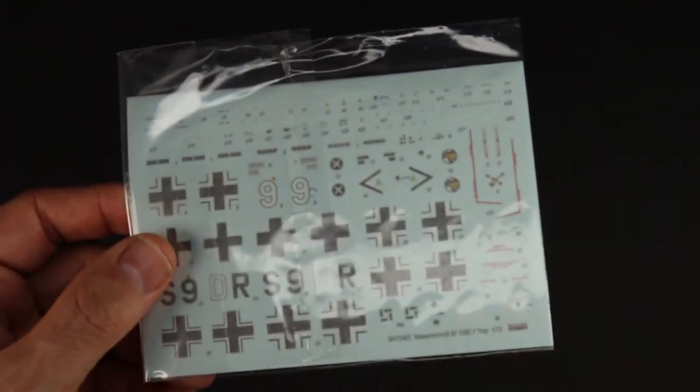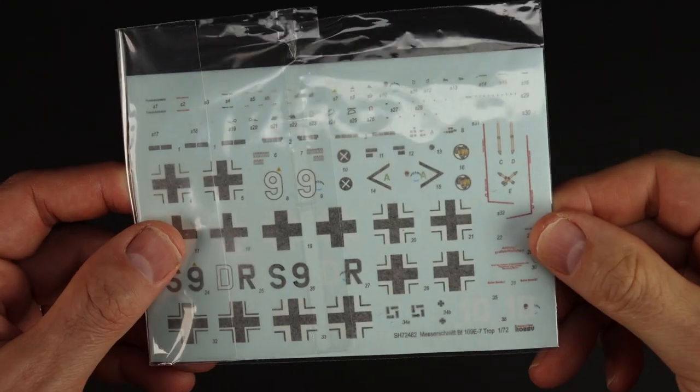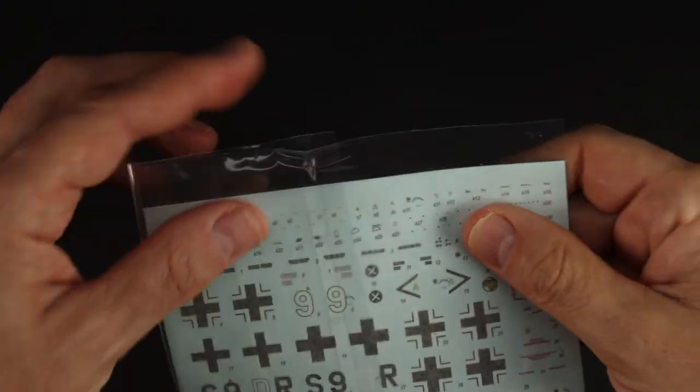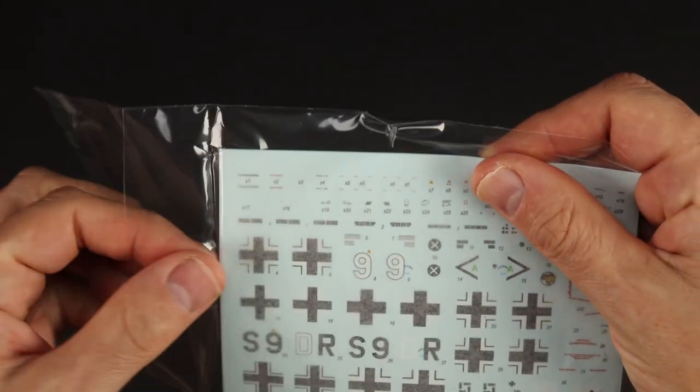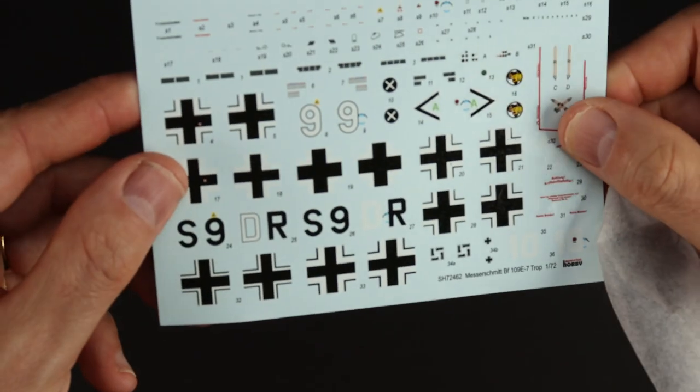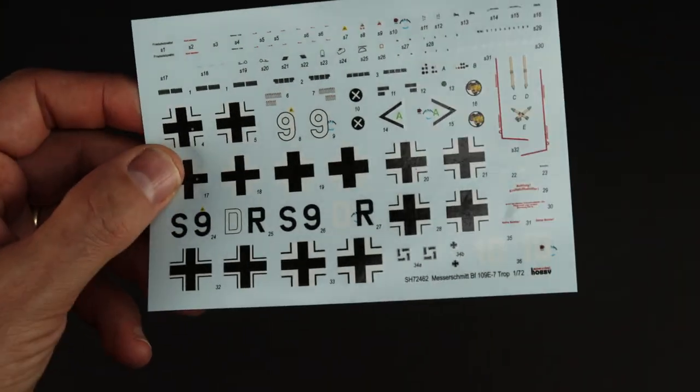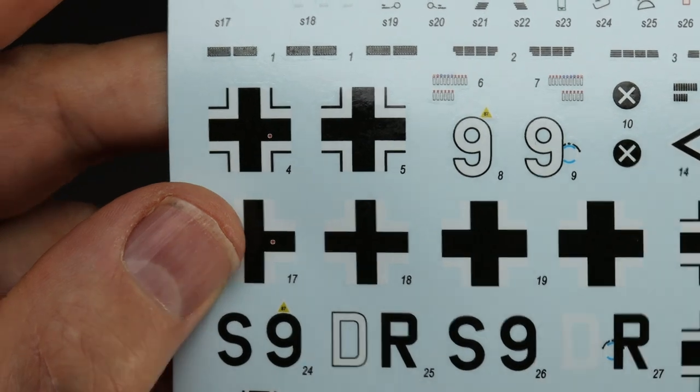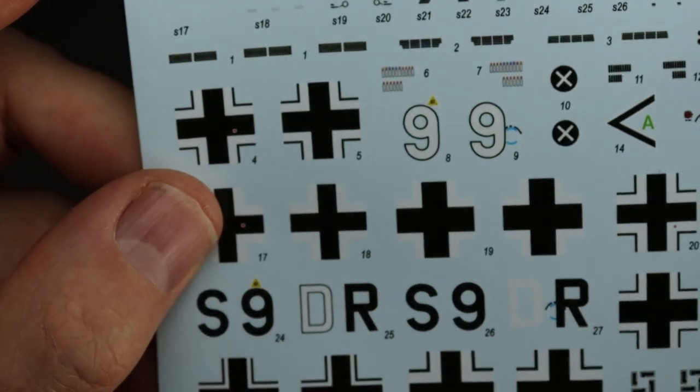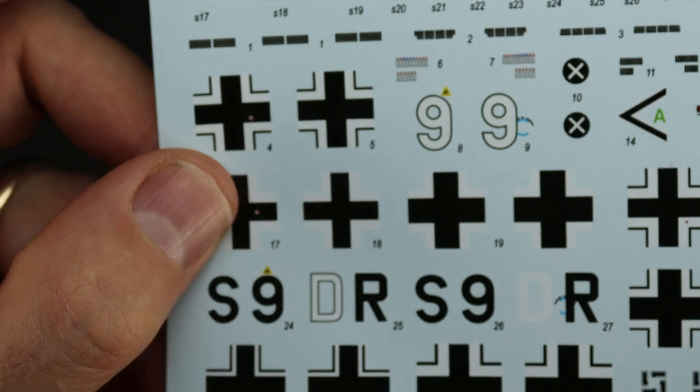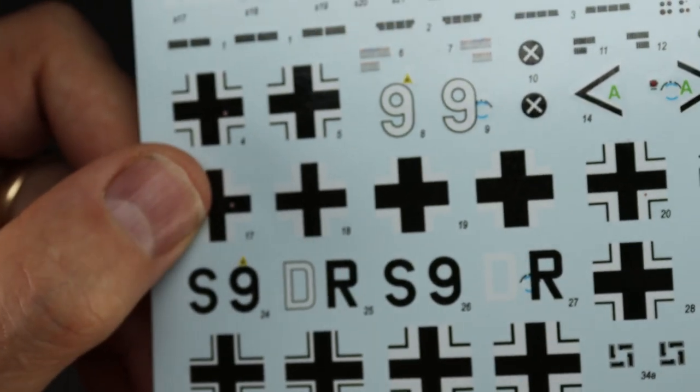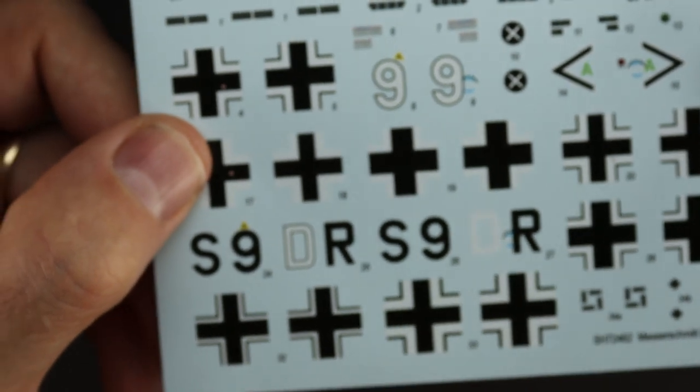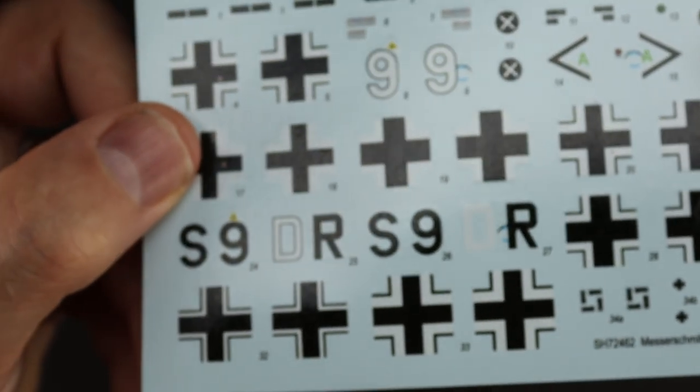Okay, onto the decals. I'm not going to get these out but I understand these are Eduard decals. So in fact, let's get them out and we'll just have a look. So if I just wing it around, just make sure we're in focus. I think they are Eduard decals because if I zoom in, you might just be able to see the rather large carrier film.